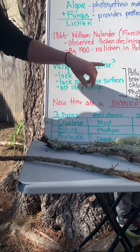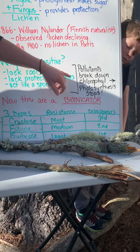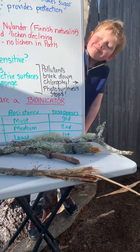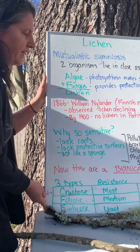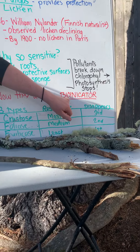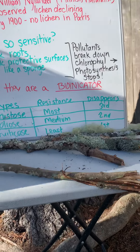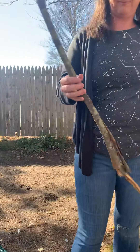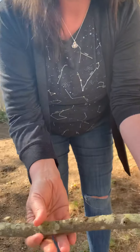It was all the way back in 1866 when William Nylander, a Finnish naturalist, observed that the lichen was going away in the gardens in Paris. And then over the course of about 35 years, all the lichen basically disappeared from Paris. They made the connection that it was actually because of air pollution.